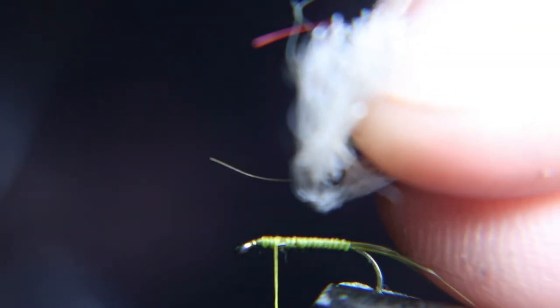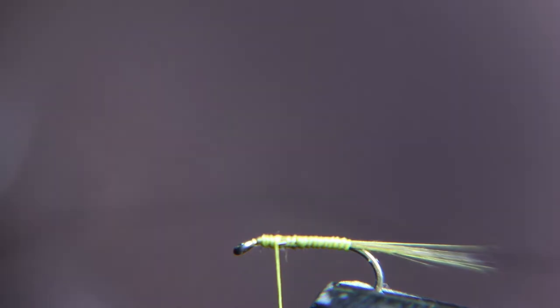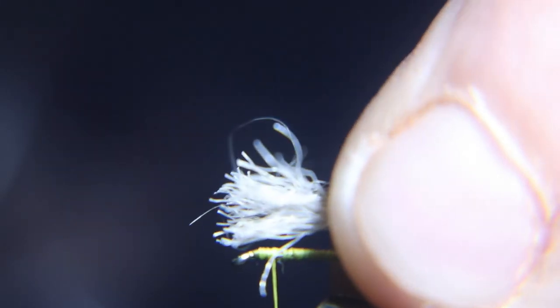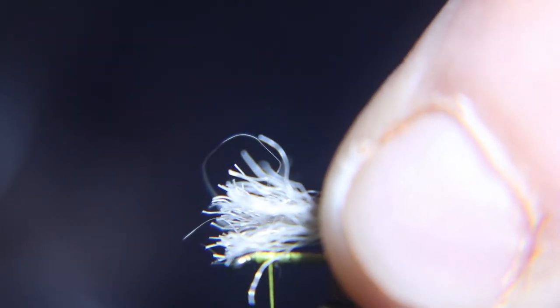We're going to tie in some of that floaty yarn stuff, whatever you call it. You can use black, I'm going to use gray, you can use white. Black tail black wing works real well, I do some of them too. You're going to measure that wing for length, the same length of the shank of the hook.